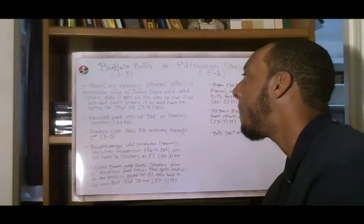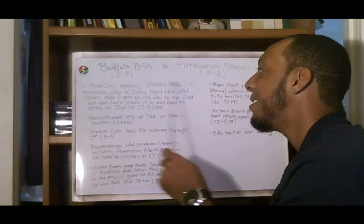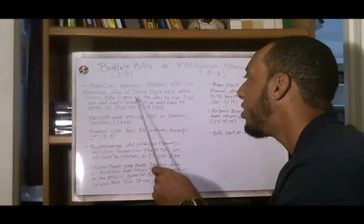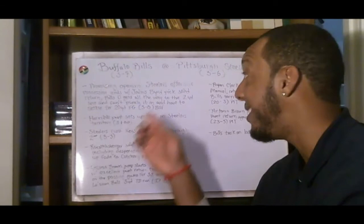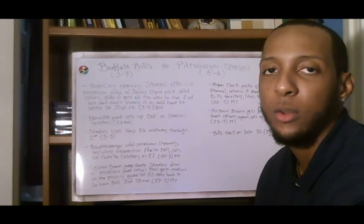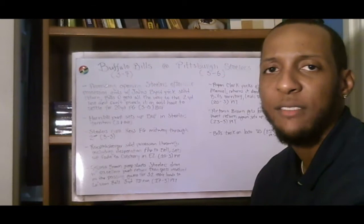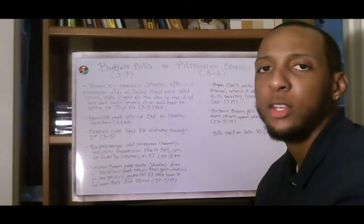Promising opening Steelers offensive possession ends with Jarius Bird pick. Solid return. Bills offense gets all the way to the two yard line and can't punch it in and have to settle for a 20 yard field goal. It's three to nothing Buffalo. Again, mark of a bad football team. You get the football down in the red zone and deep into the red zone all the way down to the two yard line. You have got to find a way in the end zone. And I want to say that it was probably about first and goal from about the seven or five. And they ended up at the two yard line and could not get it in. Inexcusable.